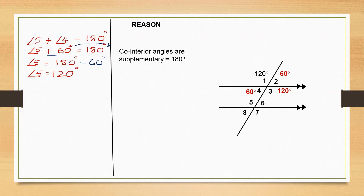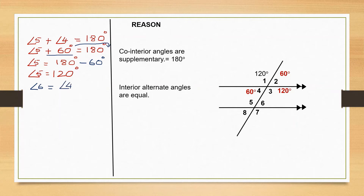So we found angle 5. Now let's go to angle 6. There are other ways of finding it — let's look for the easier way. Angle 6 and angle 4 are interior alternate angles, and interior alternate angles are equal. So angle 6 is equal to angle 4. The value of angle 4 is 60 degrees, so angle 6 is equal to 60 degrees. Angle 6 is 60 degrees and angle 5 is 120 degrees.